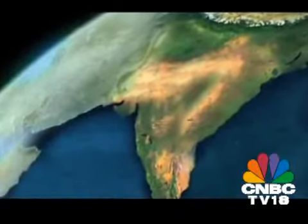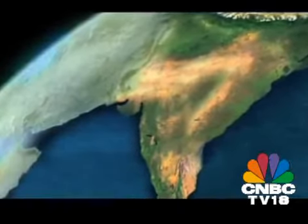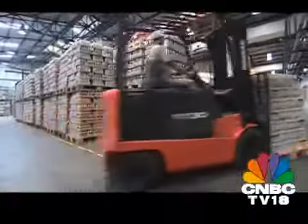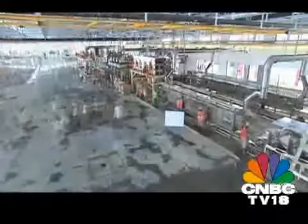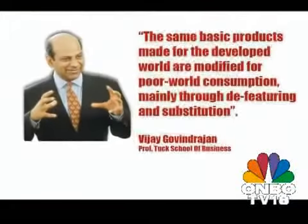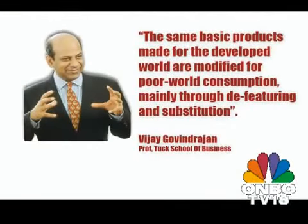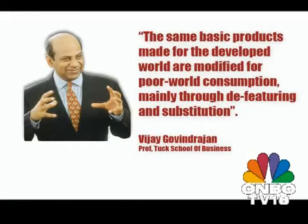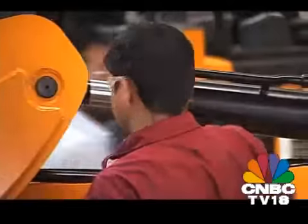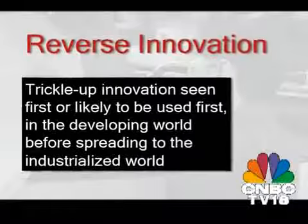Typically in this model, innovation flows in one direction — downhill — from the headquarters of the multinational corporation out into the world. Vijay Govindarajan describes it as the same basic products made for the developed world, which are modified for poor world consumption mainly through de-featuring and substitution. He prefers the reverse innovation approach.